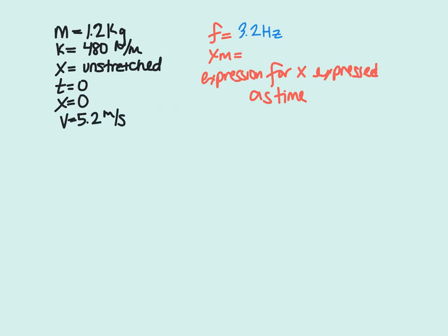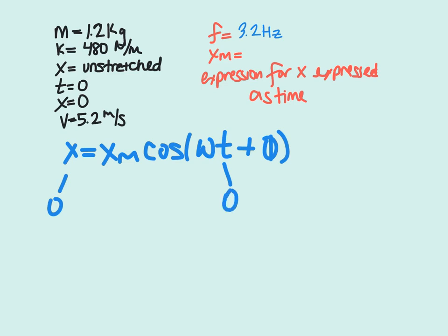Now for the next part, we're trying to find our amplitude, xm. We can use the equation x equals xm cosine of omega t plus phi. In this case, x equals 0 and t also equals 0, because we were told that at time 0, the displacement was 0, passed through position 0.